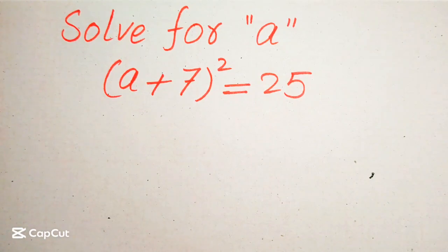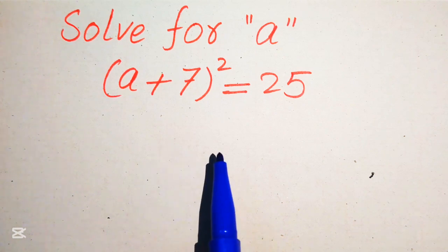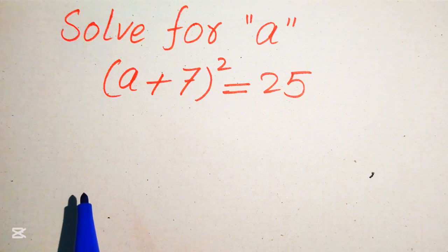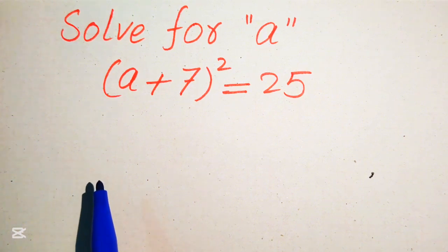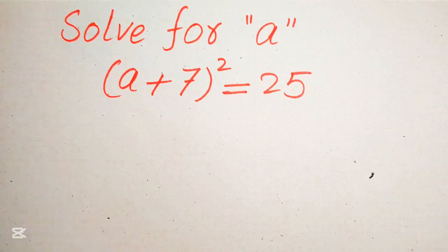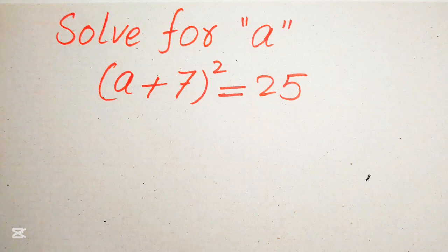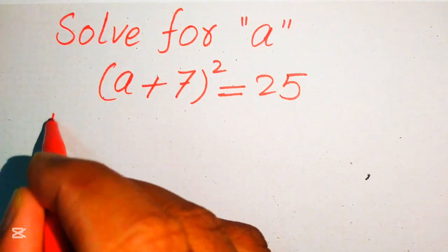Hello everyone, welcome. We'll solve this algebra problem: (a + 7)² = 25, and we solve for the values of a. This is a very nice problem. We'll solve it using two methods — I hope you like both. If you have any other method in mind, please don't hesitate to write it in the comment section.